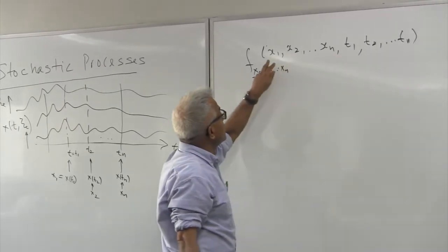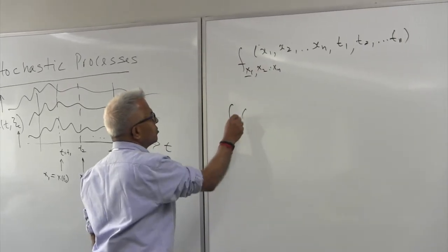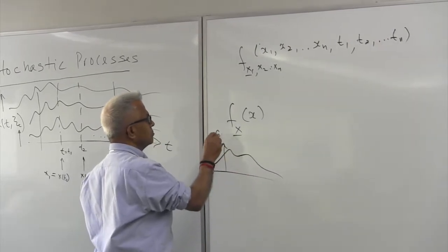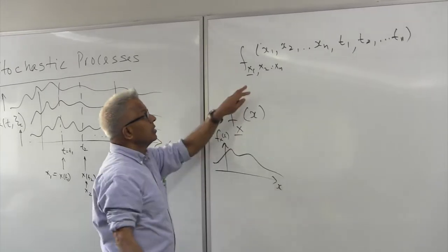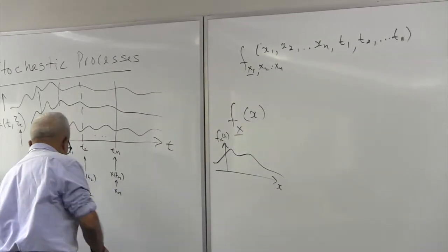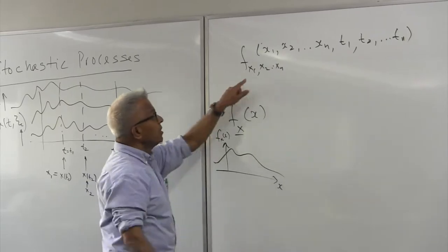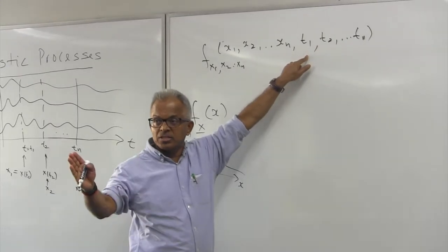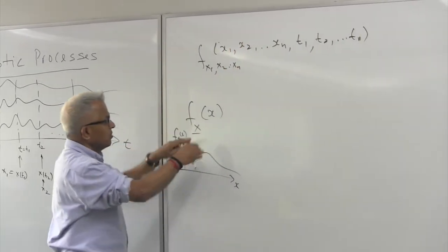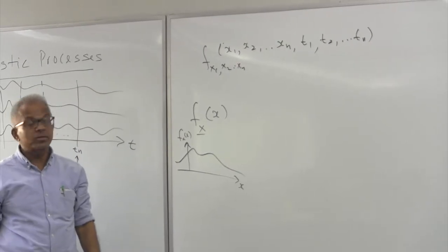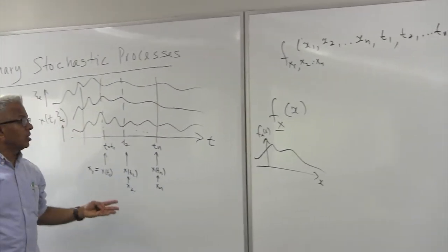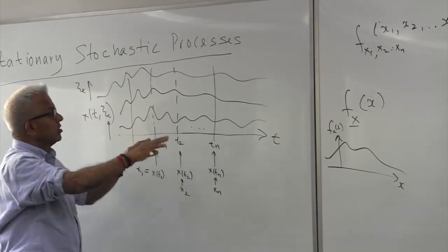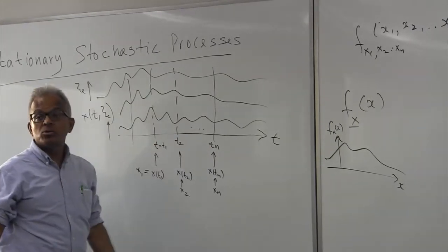The random variable is going to be a function of the variable itself and has its own density function. Here the characterization is by the time instant — if you change the time you get a different characterization, so this density function itself could be different. The logical way to characterize such a process is to find the joint density function for all values of time.